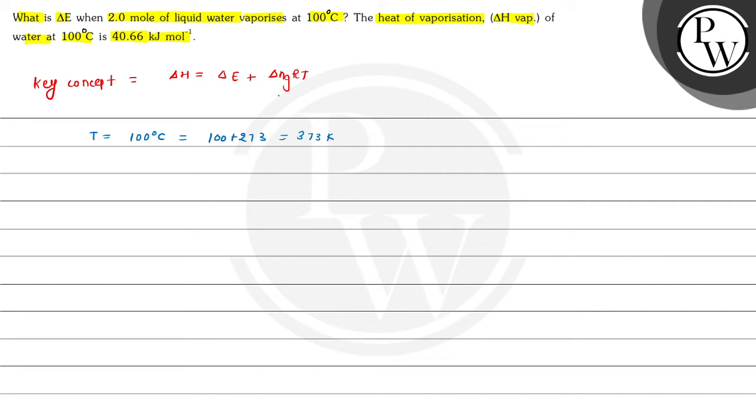We can substitute the values. 2H2O liquid is converting to 2H2O gas. ΔH_vaporization equals 2 moles × 40.66 kJ/mol = 81.32 kJ.